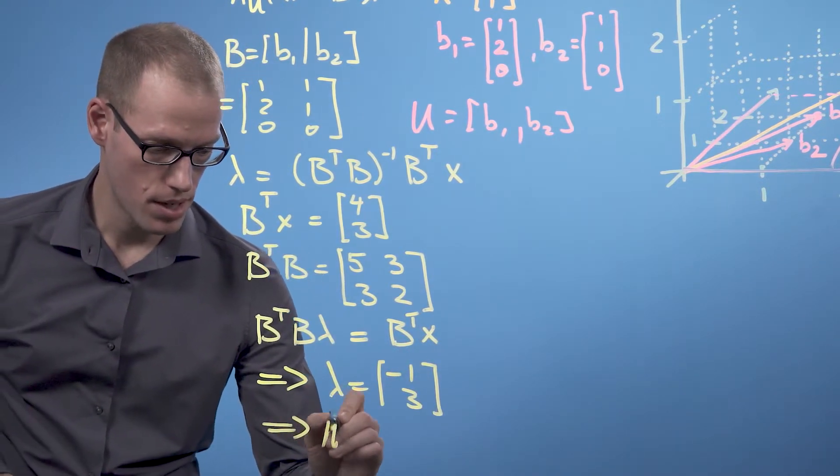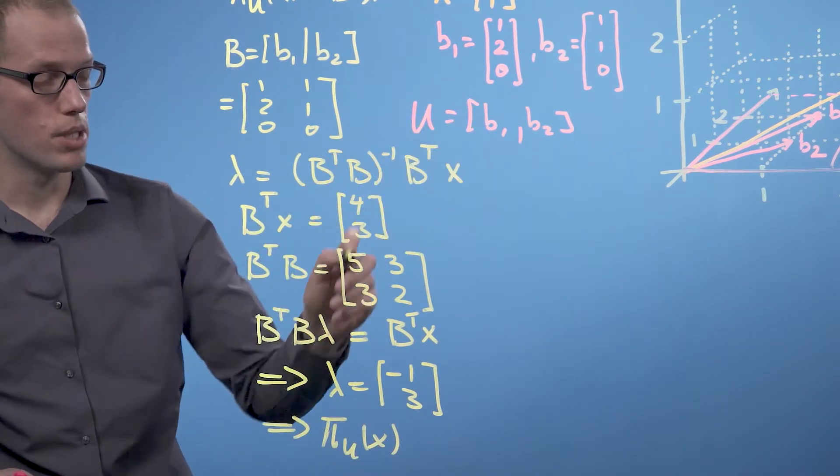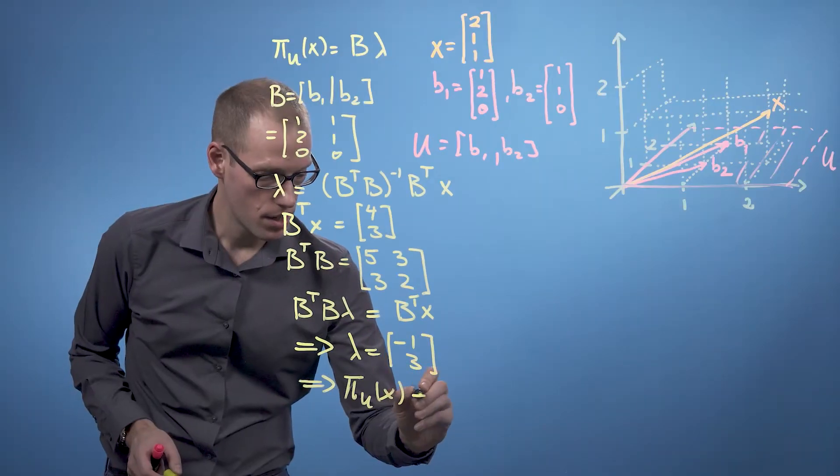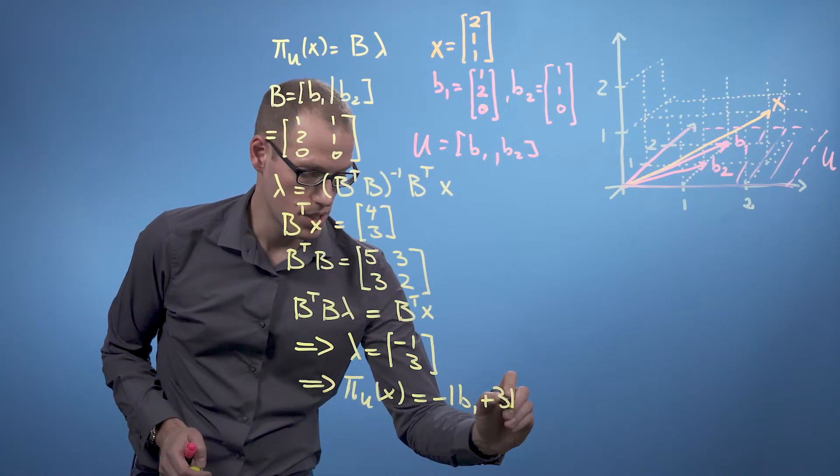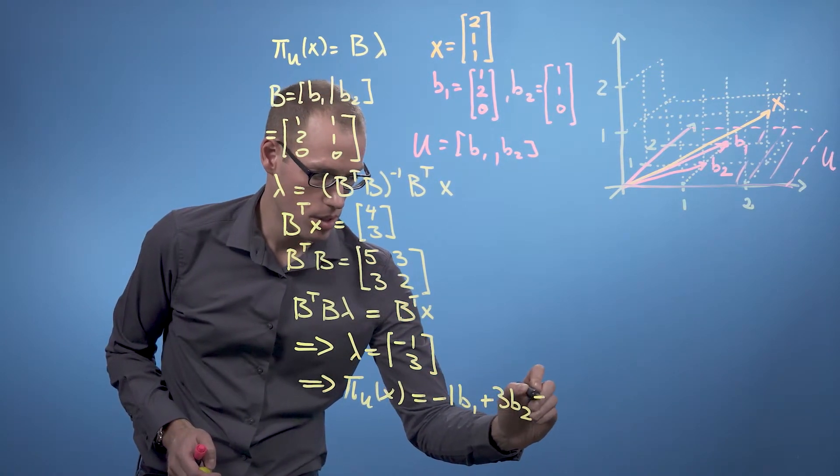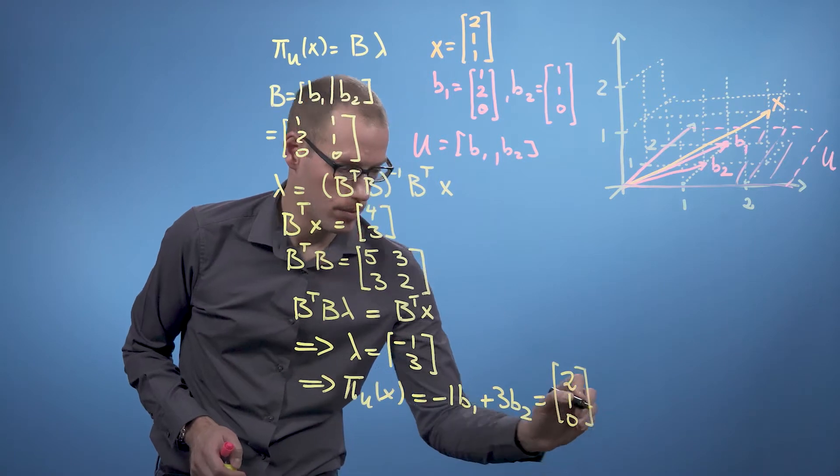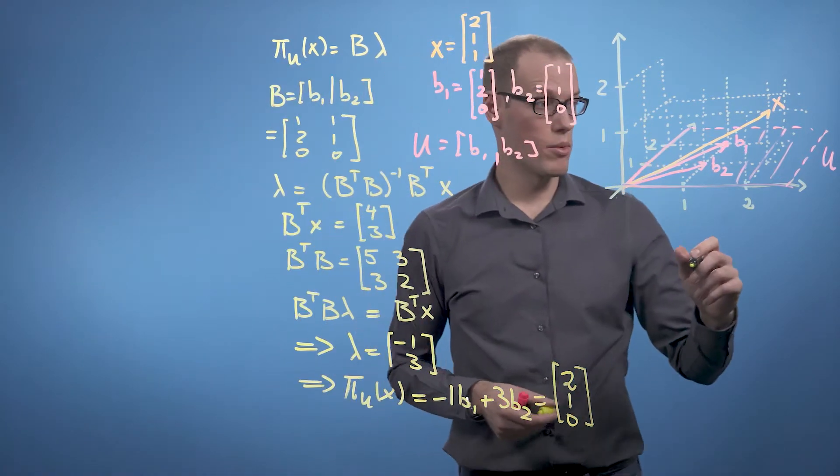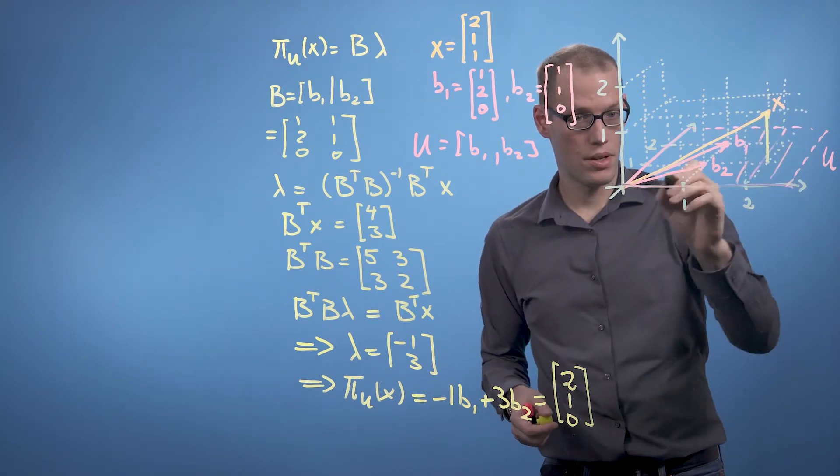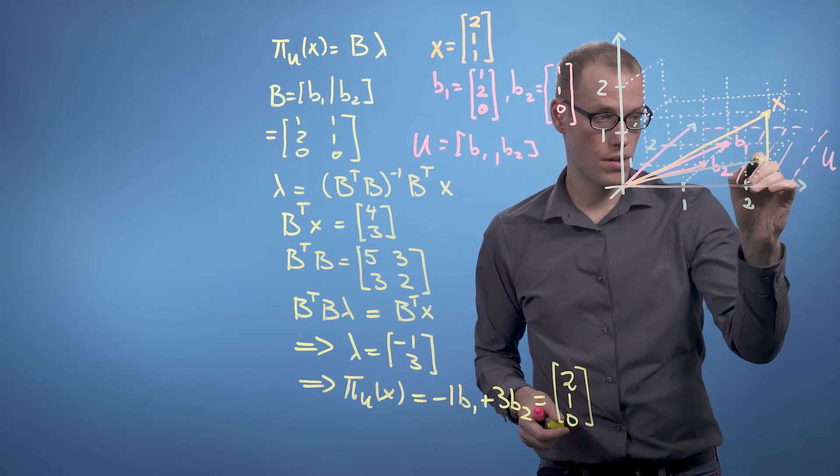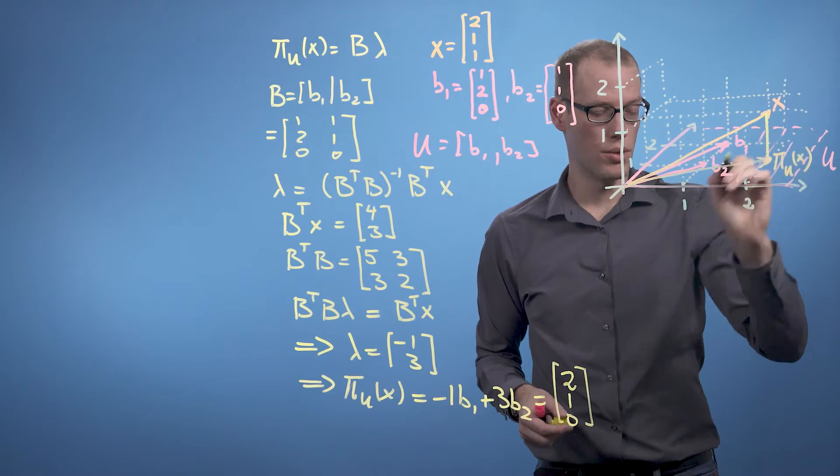And this implies our projection of x onto the space spanned by the two b vectors is minus 1 times b1 plus 3 times b2, which is 2, 1, 0. In our diagram over here, this would correspond to this vector here. This is pi u of x.